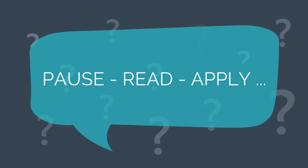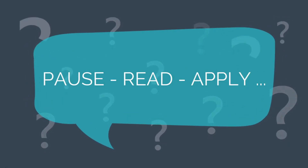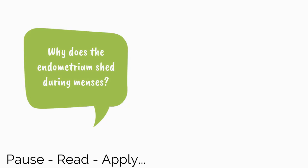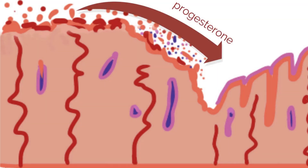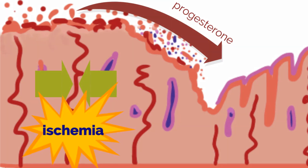Why does the endometrium shed during menses? The fall of progesterone from the corpus luteum results in the collapse of endometrial glands. The decline in progesterone also results in constriction of the spiral arteries, leading to local ischemia of the stratum functionelle and resulting in endometrial sloughing.